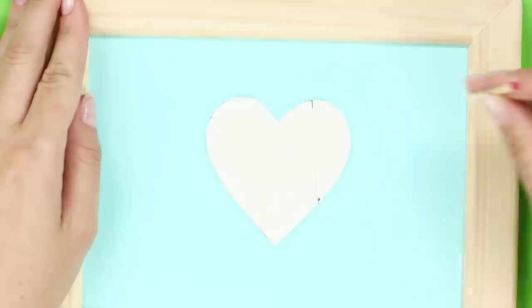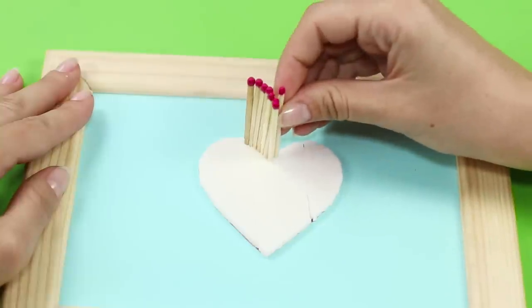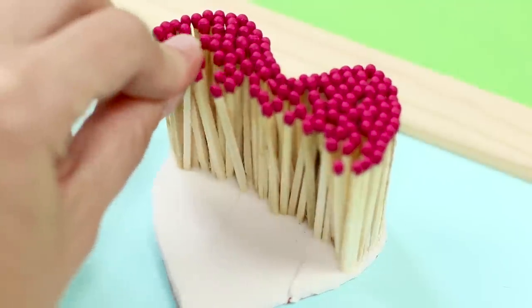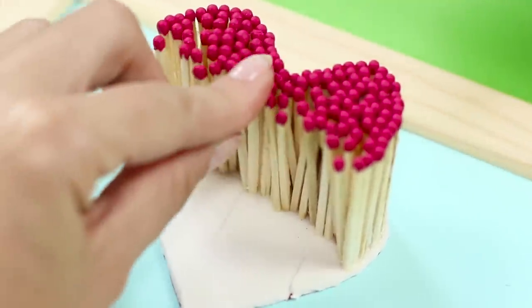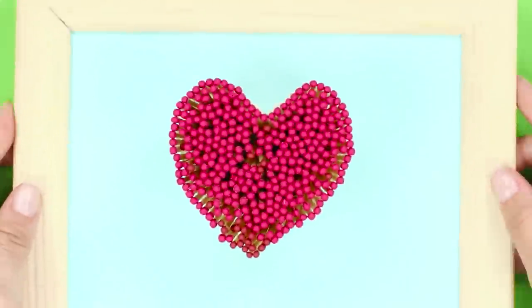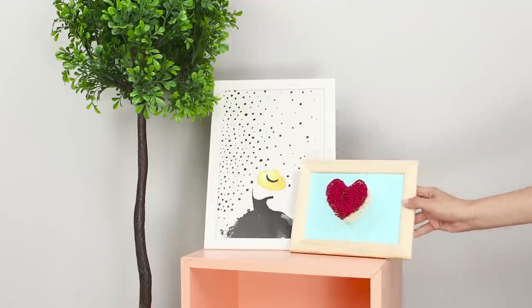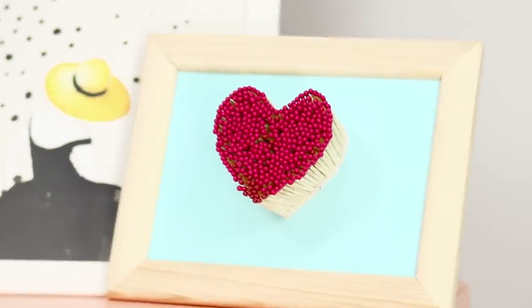Arrange matches in vertical rows, gluing them to the scotch tape. Starting from the top of the heart, fill all the spaces with matches. It turned out a romantic piece of furniture! You can even feel sorry to set fire to it!